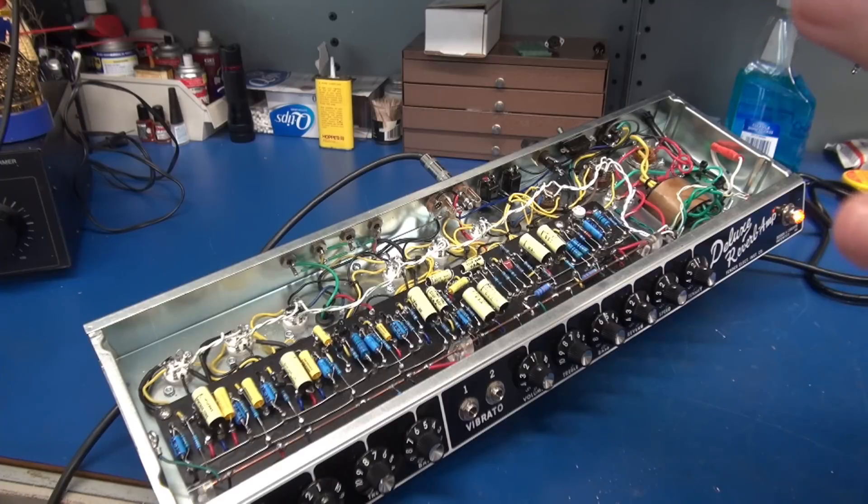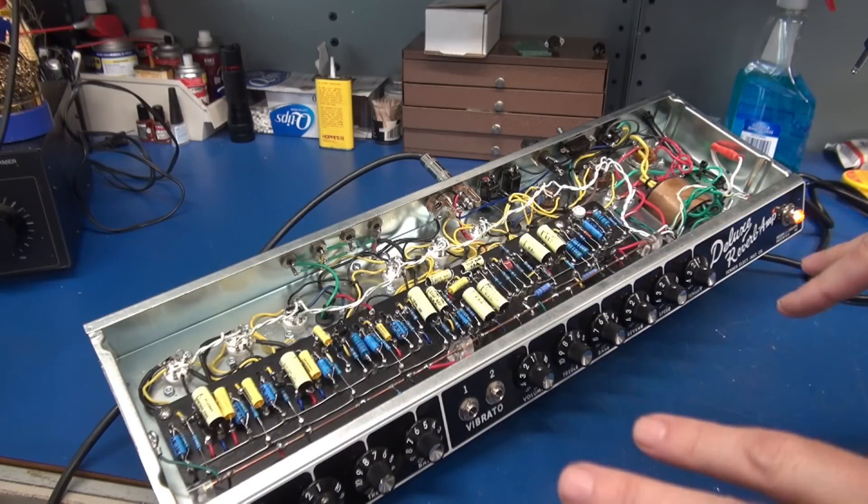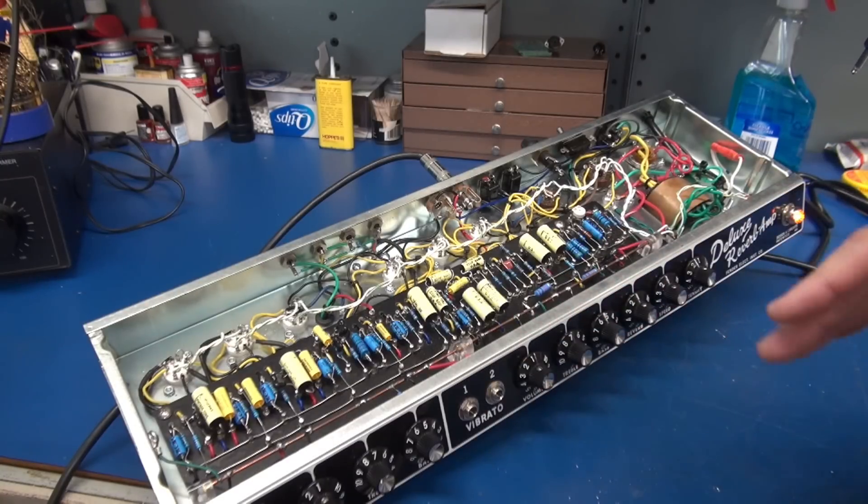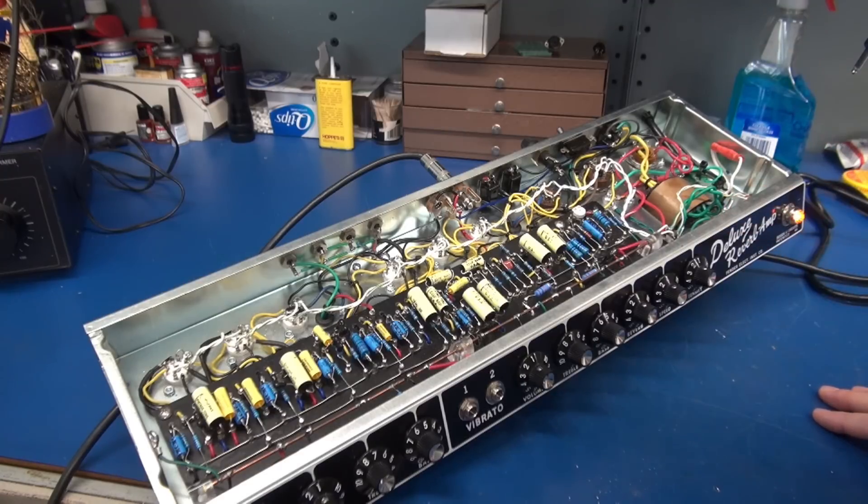Alright, here is the noise level coming off of the deluxe reverb amp running the Hoffman turret board. I have my volumes at minimum. Reverb is all the way down. And you can tell it's unacceptable.